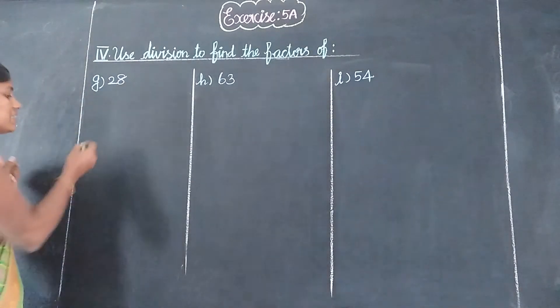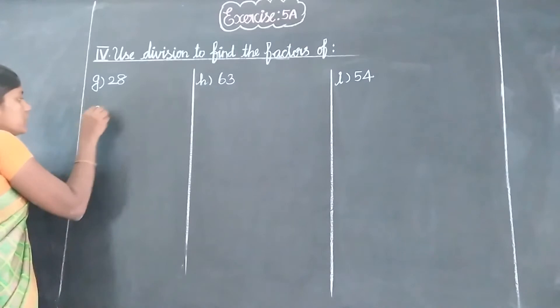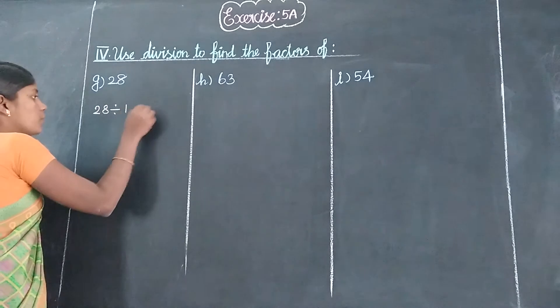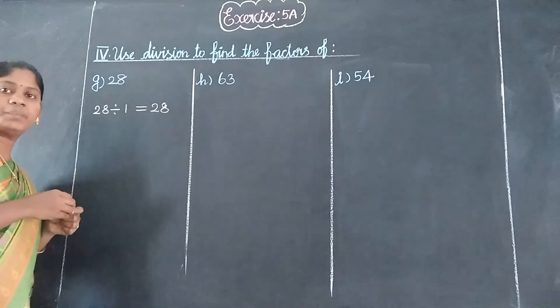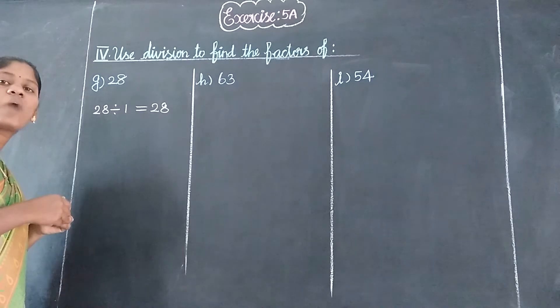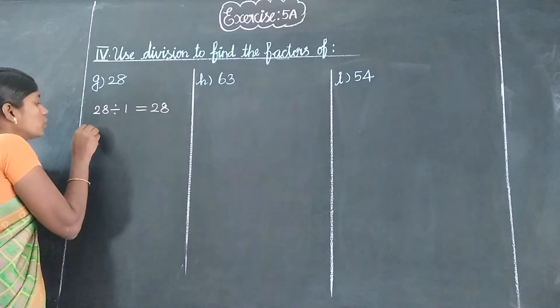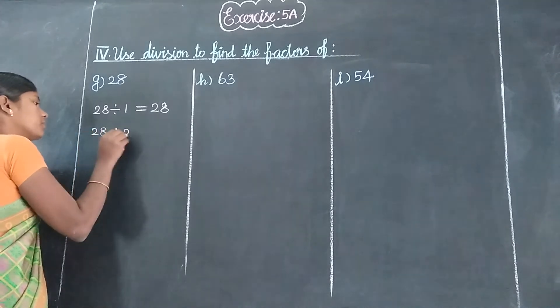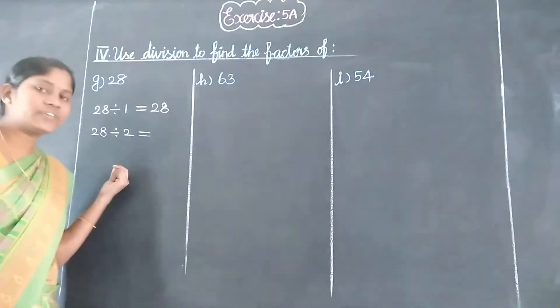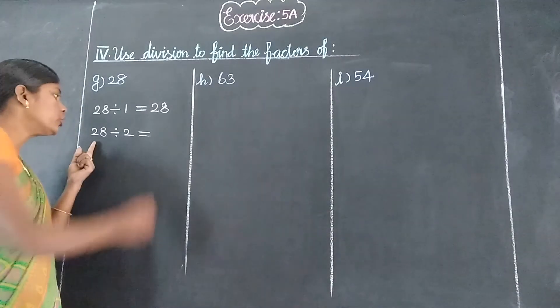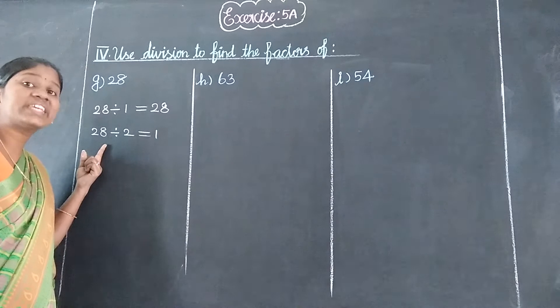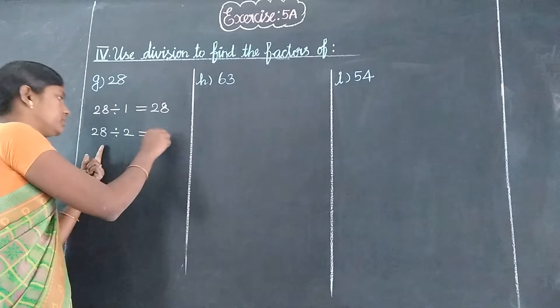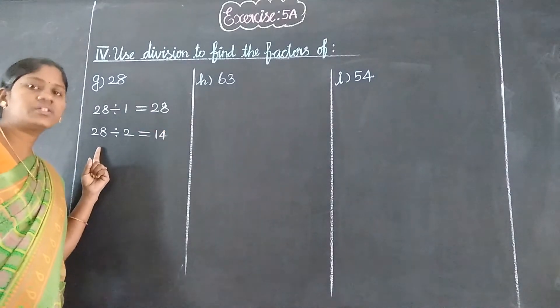The first one is 28. From 28, one table is used. So 28 divided by 1 equals 28. Next 2 table. 28 divided by 2. How many 2s in 28? Four 2s are 28.